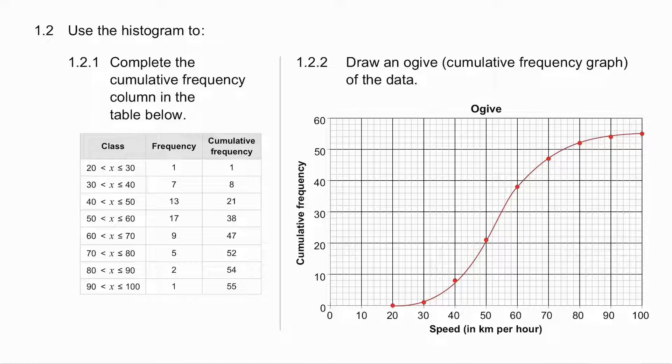The next question asks you to draw an ogive or the cumulative frequency graph. Remember we plot the maximum value. So it's 30, 1, 40, 8, all the way up to 100, 55. We must ground it to the lowest value. So we must ground it to 20 and an ogive is never drawn with a ruler. It is always drawn freehand with a smooth curve.